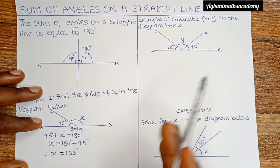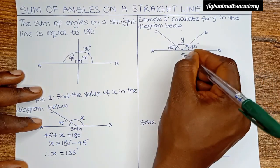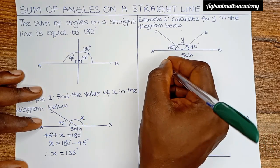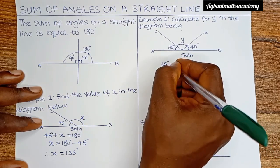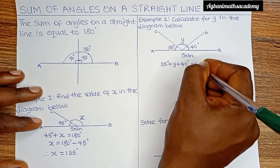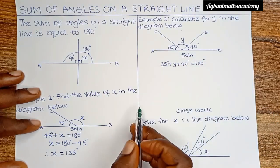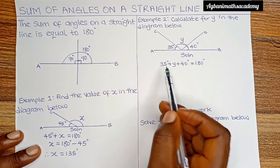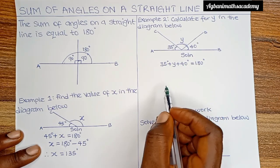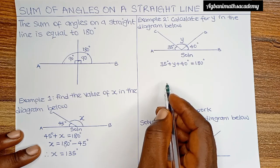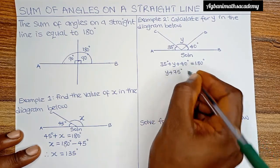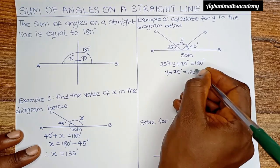To get the value of y, we first add the two known angles together: 35 degrees plus 40 degrees gives us 75 degrees. So the equation becomes: y plus 75 degrees is equal to 180 degrees.